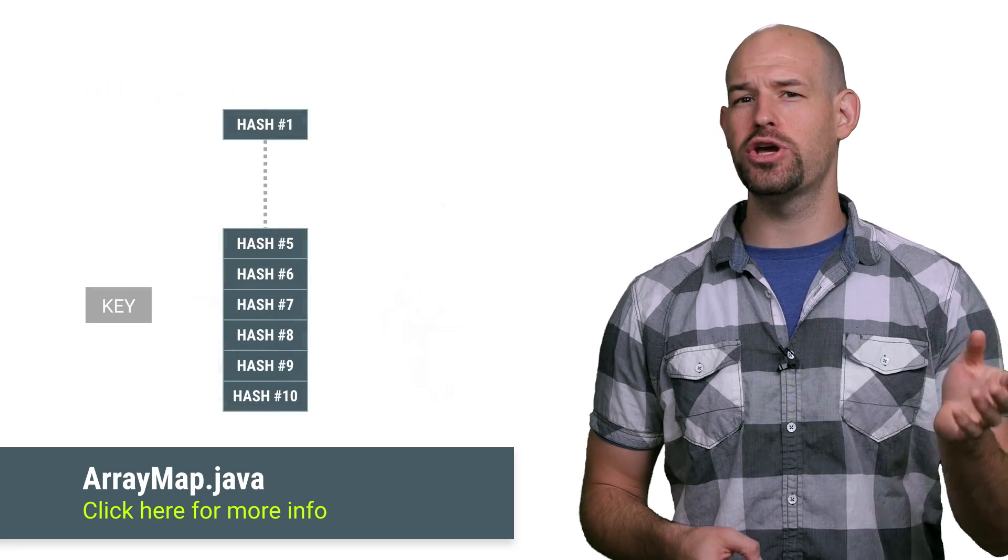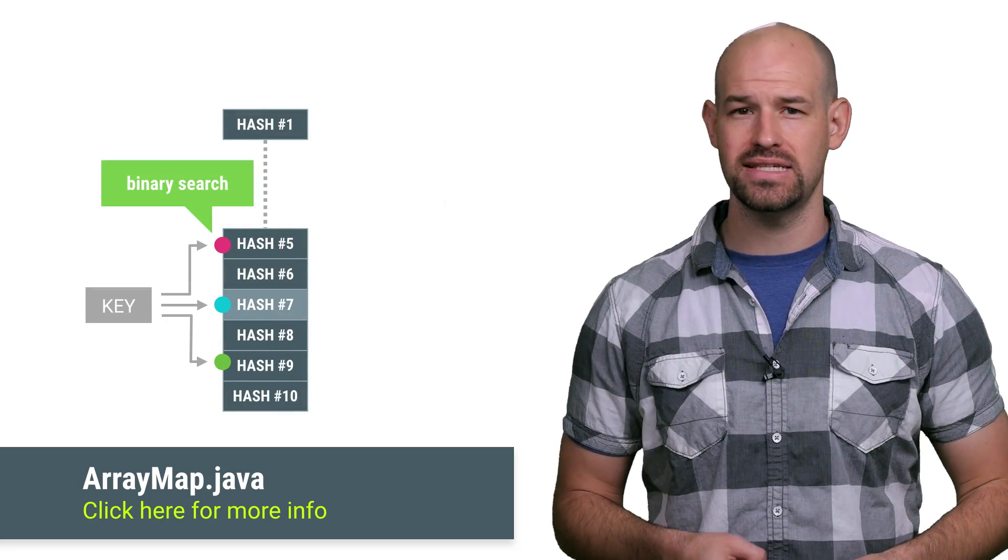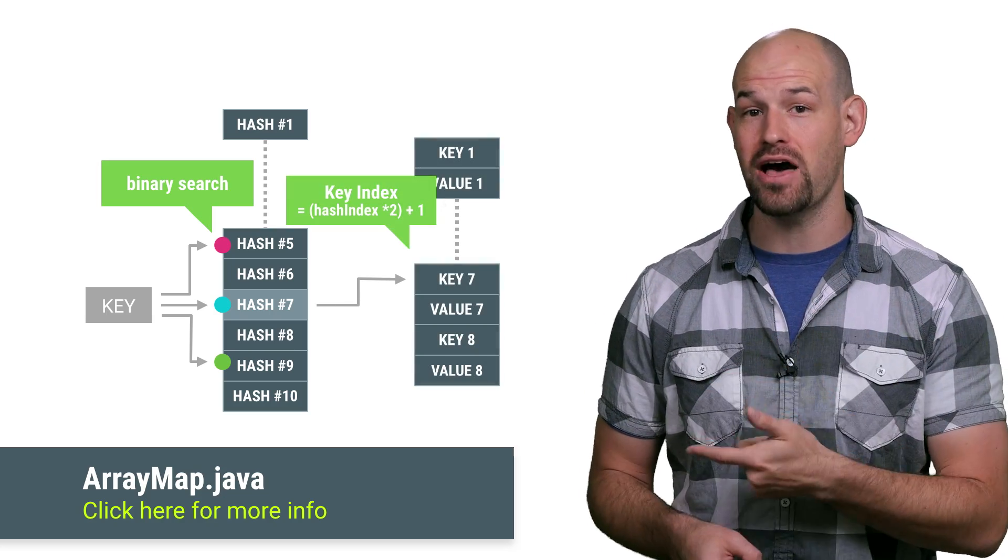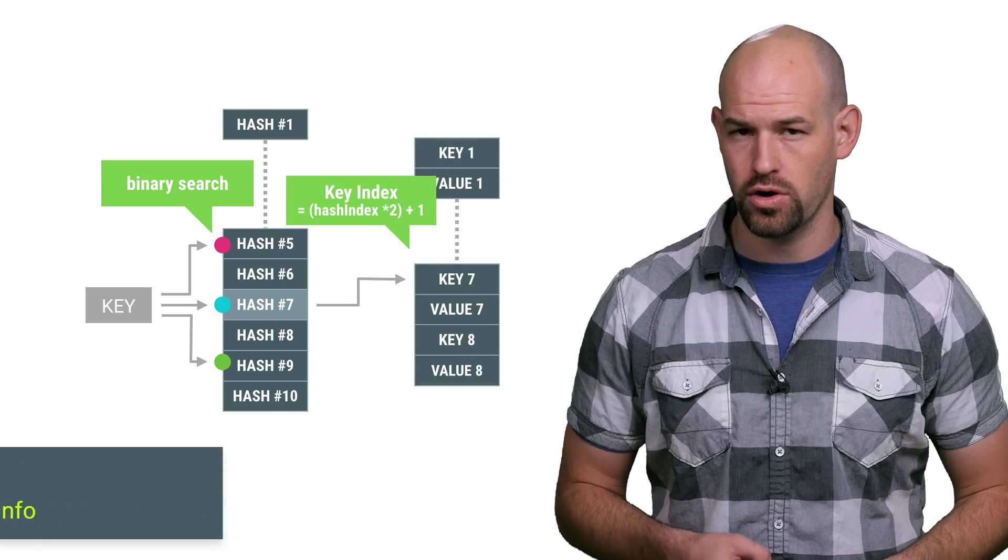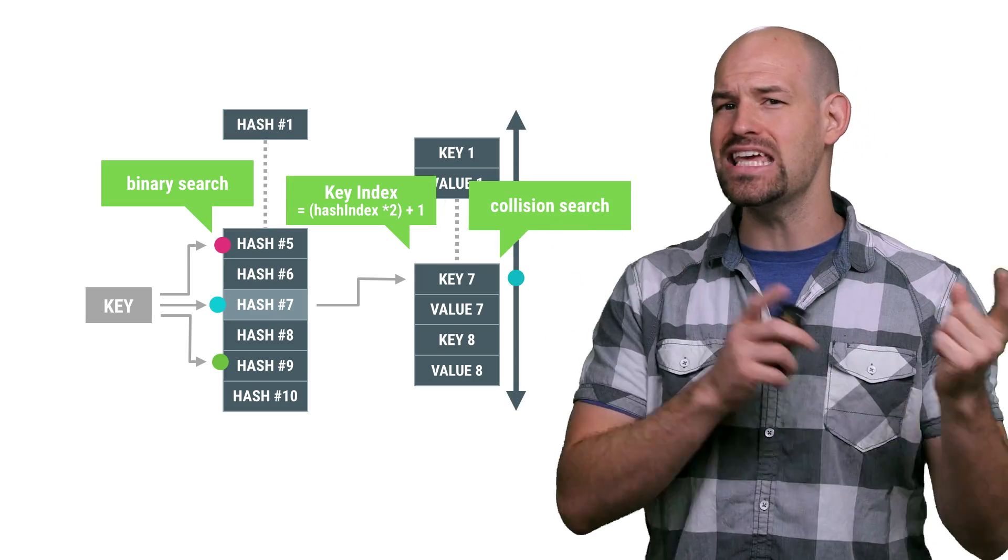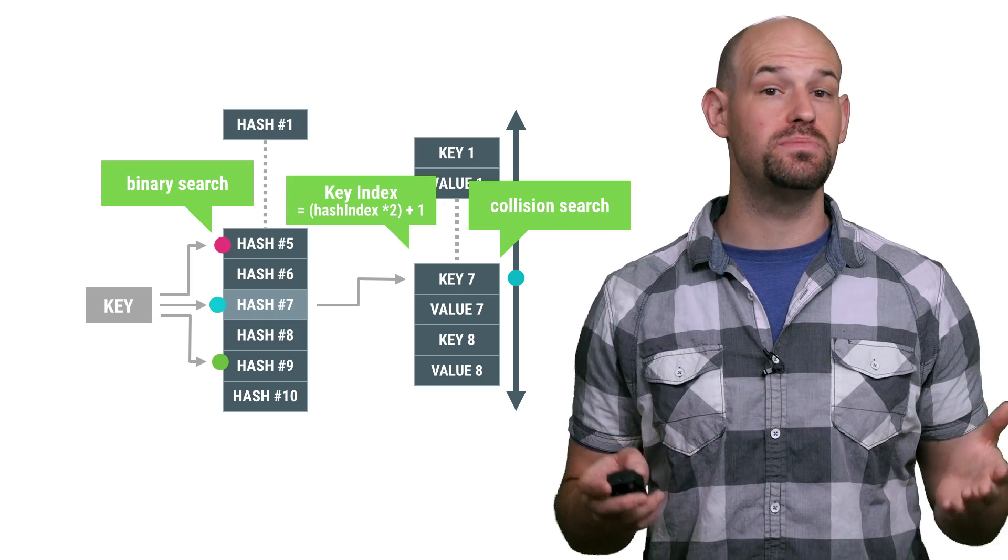When you want to fetch a value, we create a hash for the key, and then binary search the hash array to find its index. We can use that index directly, then, to find the location in the key value pair in the interwoven array. If the key in the second array isn't equal to the one that we submitted when we were searching for things, then we assume that there has been a collision.